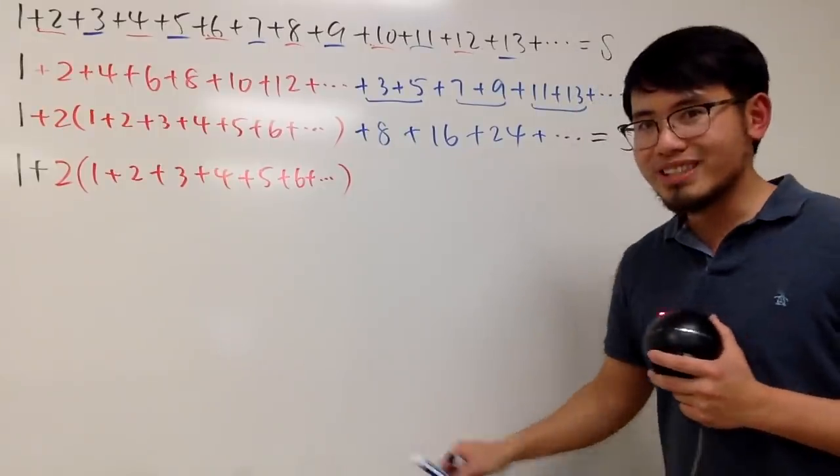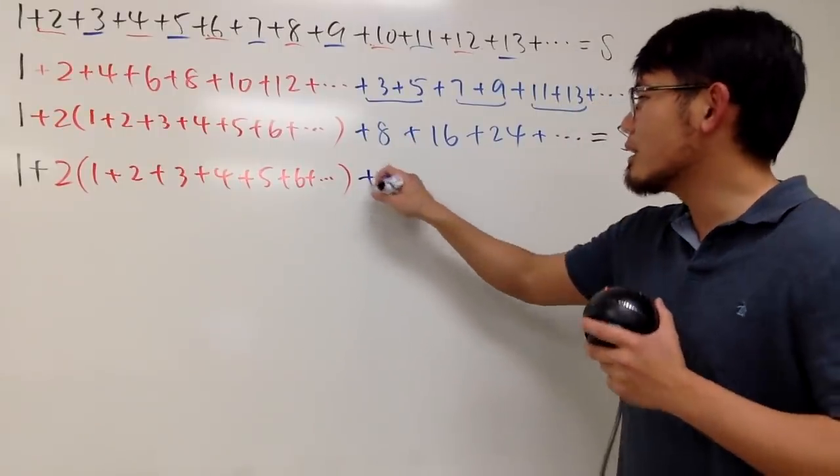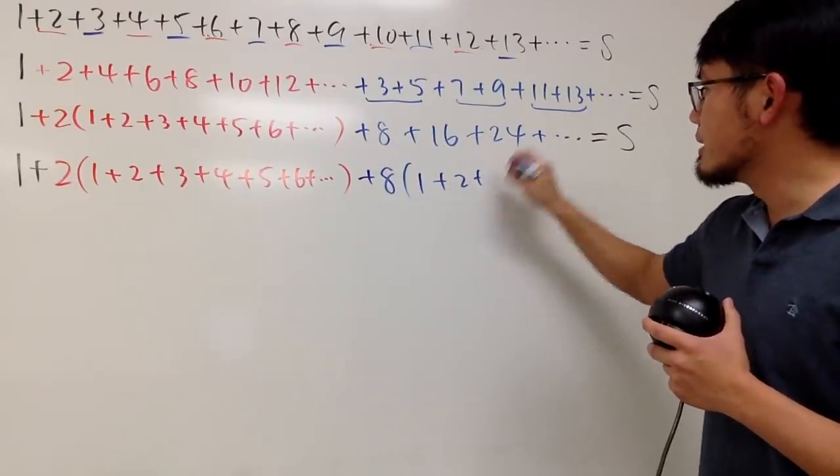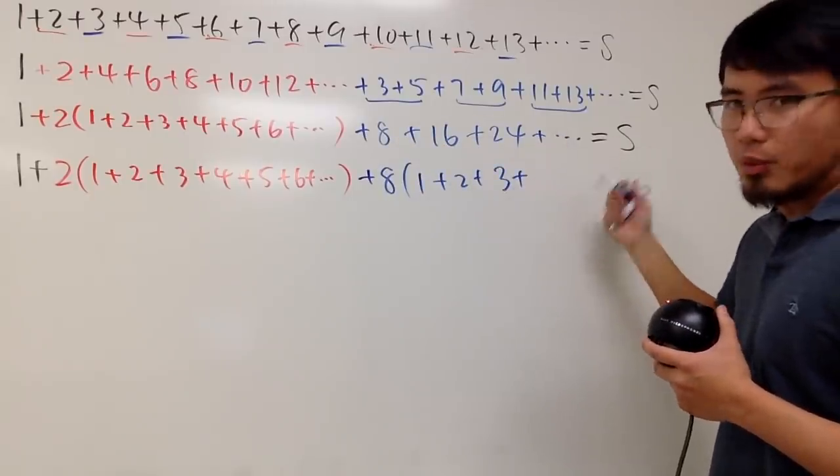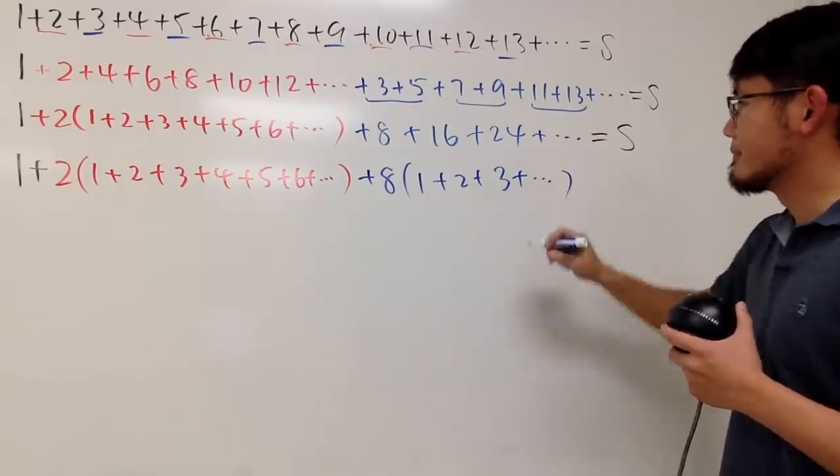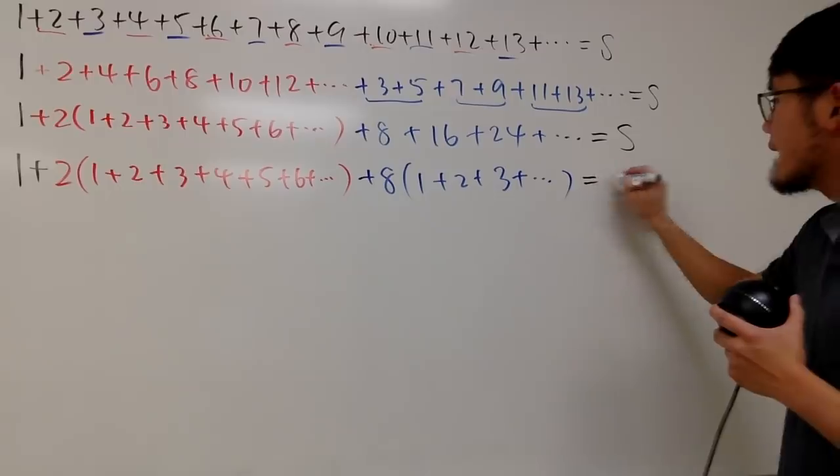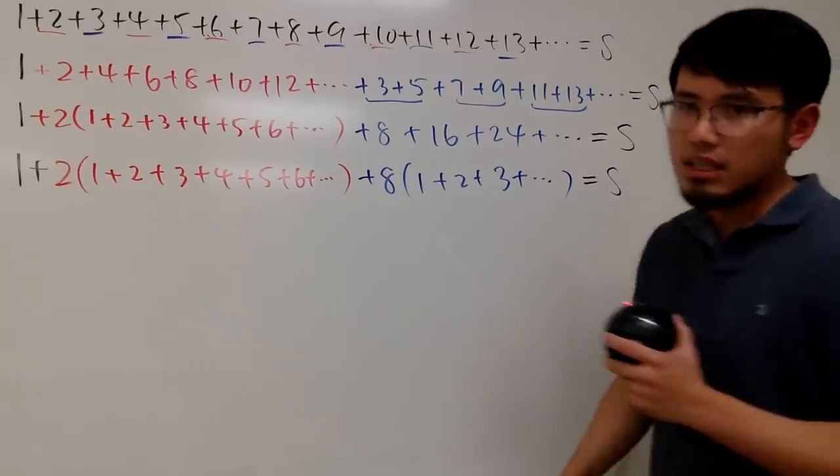And then, right here, for the blue portion, yes, the tax rate is much higher, you factor out the 8. And then this becomes 1, this becomes 2, this becomes 3, and then the next one will be 4, and so on. Don't forget, all this right here is still equal to S, isn't it? Yes, it is.